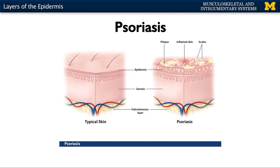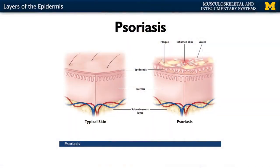It usually takes about four weeks for keratinocytes to be developed in the stratum basale and move superficially to the stratum corneum. Certain things can speed that up — abrasions, cuts, and burns can all accelerate that process. In certain disorders, similar to psoriasis, keratinocytes divide and are produced more quickly, moving superficially faster than in a typical individual.